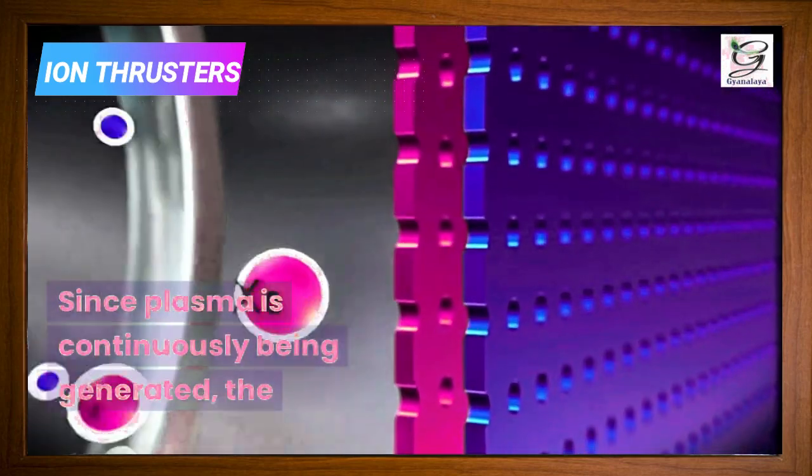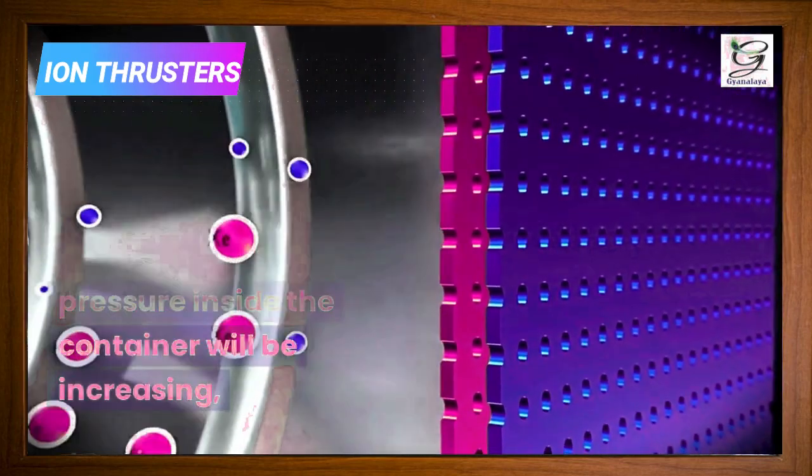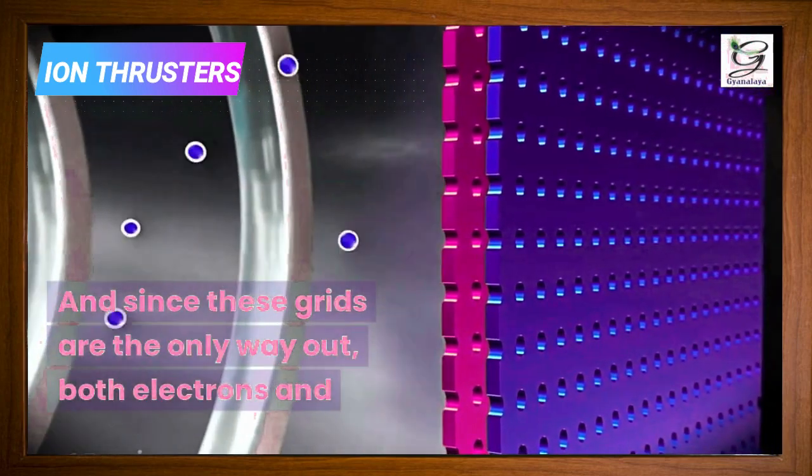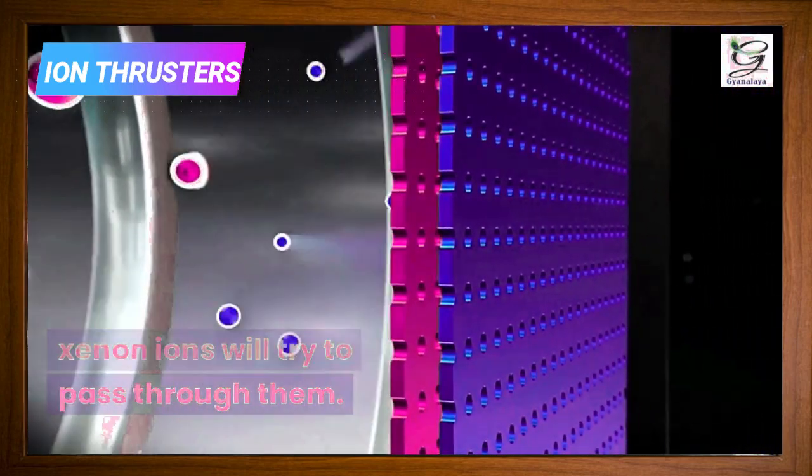Since plasma is continuously being generated, the pressure inside the container will be increasing, and since these grids are the only way out, both electrons and xenon ions will try to pass through them.